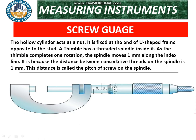When the spindle completes one full rotation, it moves one millimeter along the index line, covering a distance of one millimeter. This distance — called the pitch — equals 1 mm, which is the distance between consecutive threads on the spindle.